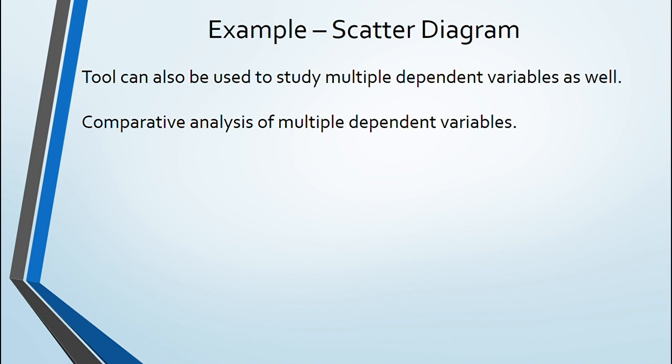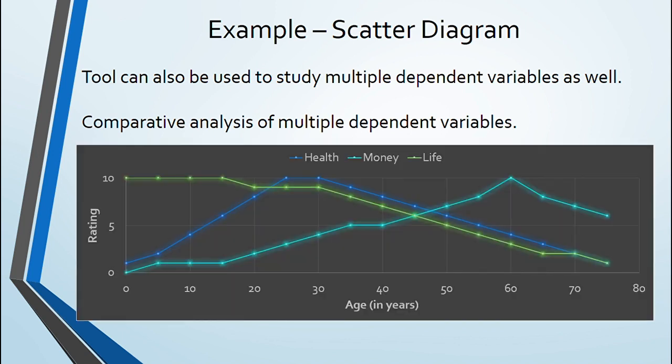These hundreds of individuals have to rate from 0 to 10 as low to high against each aspect for their life's age. Taking average of all data points, this scatter plot was created.